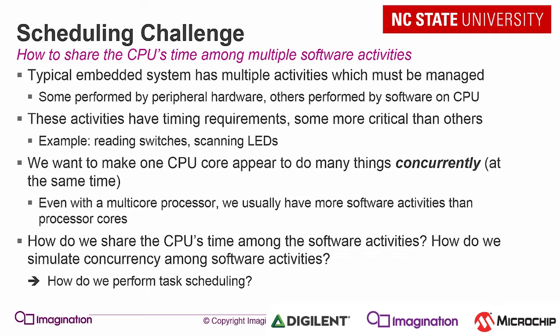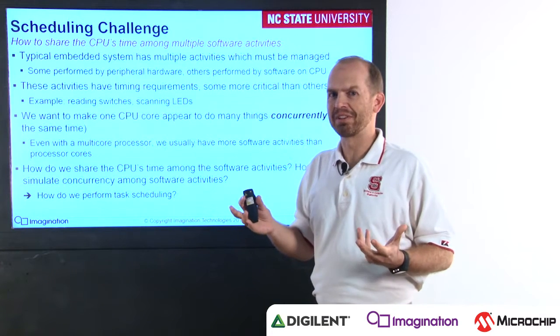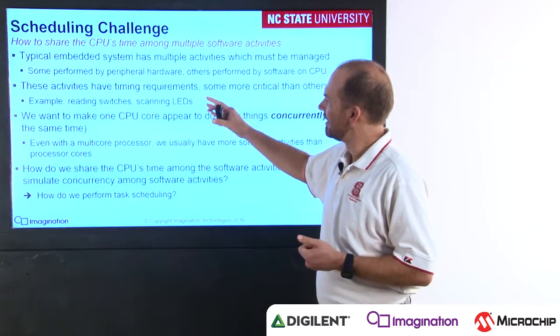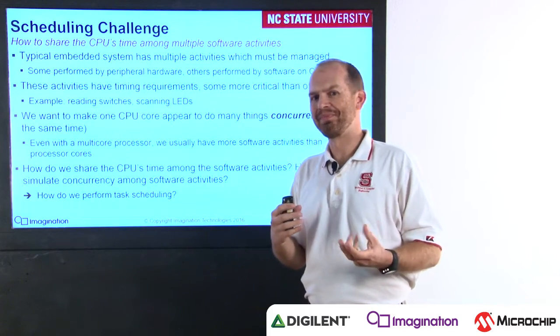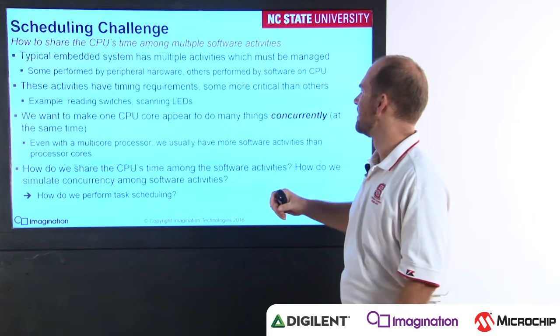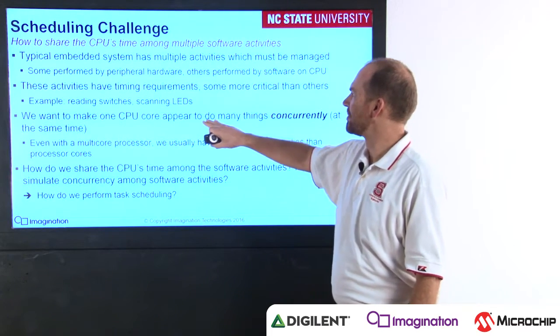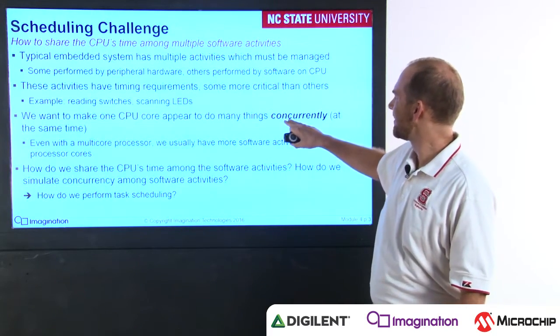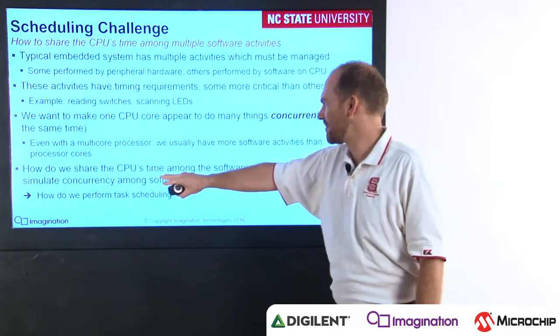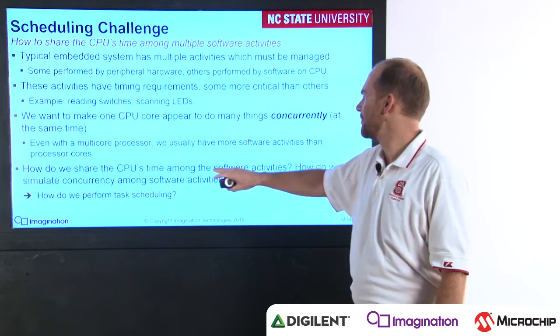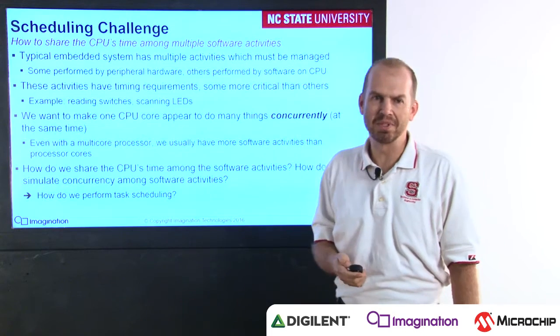There's going to be peripheral hardware that does a lot of the work. However, there's still other work that's left over that needs to be done in software. This software needs to juggle various activities, so the CPU has to seem as if it's doing several things at the same time. This is the challenge of scheduling. We want to make one CPU core appear to do many things concurrently. Scheduling is the question of how do we share the CPU's time among the software activities.